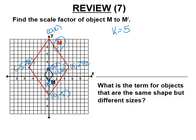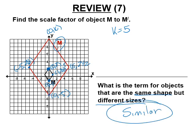What is the term for objects that are the same shape but different sizes? The answer is similar. Objects that are the same size and shape are congruent. Objects that are different sizes but the same shape are called similar — similar has a very specific meaning in math.